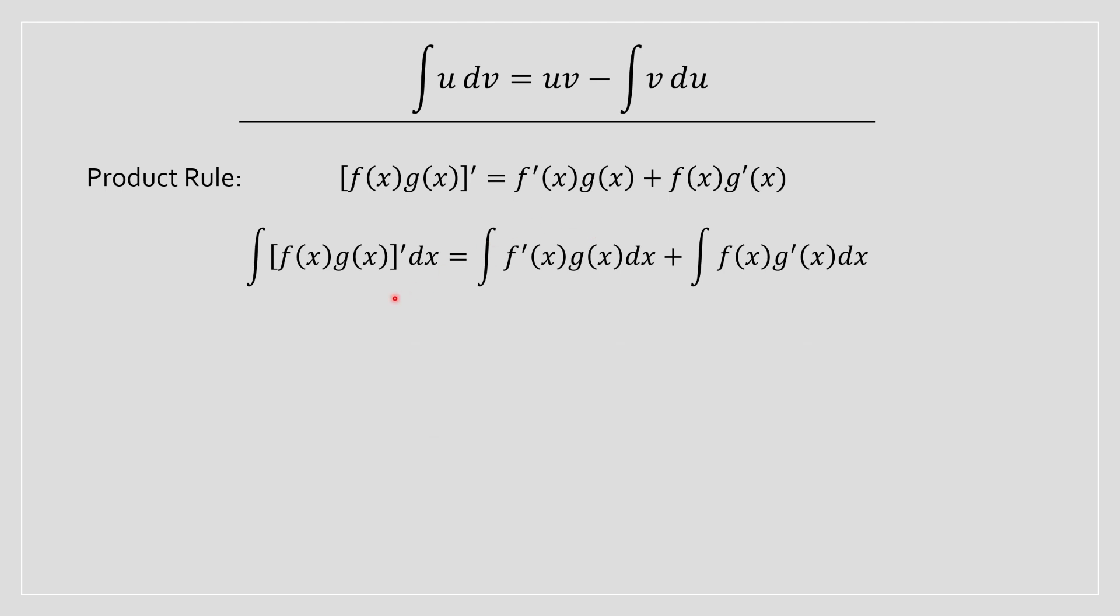So at this stage, what you are going to have to do is we want it to look something like this. And in that case, we're going to have terms that have u and v in it. Right now, we've got f of x and g of x. So we're going to change the notation. We're going to let u equal f of x, du equal f prime of x dx, v equal g of x, dv equal g prime of x dx.